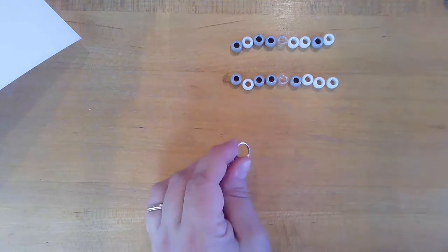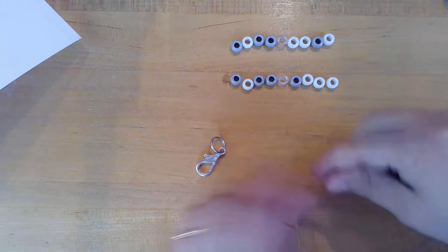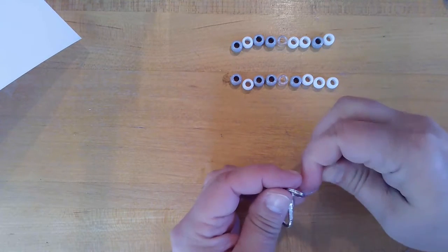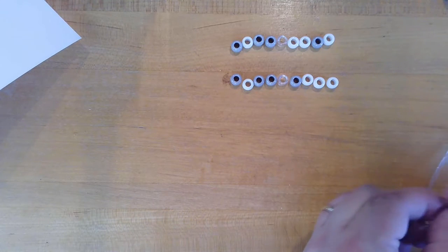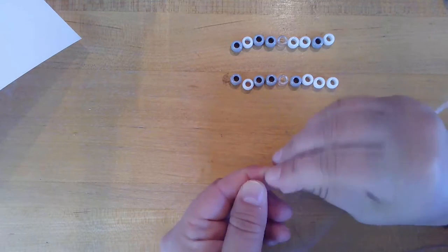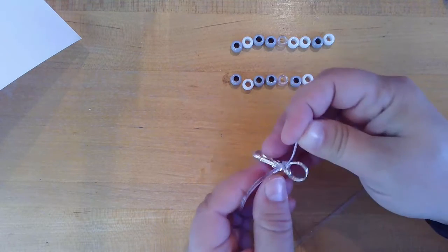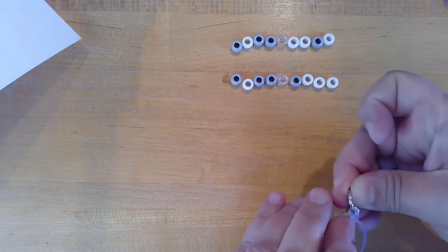All right, once that's on there, you can take your cording. Depending on what word you're coding, you can either use one long piece by just tying a knot on the end of your ring. Like so. For example, if you're doing your name, then you would have it and then put the beads on the cord.